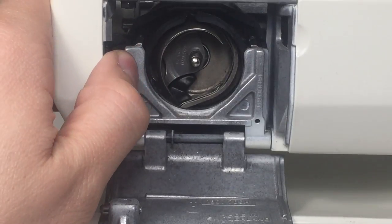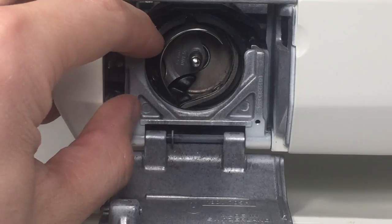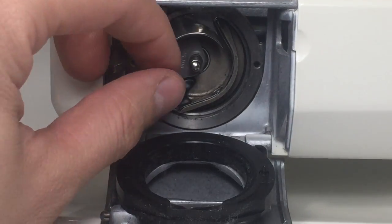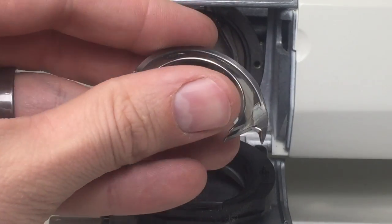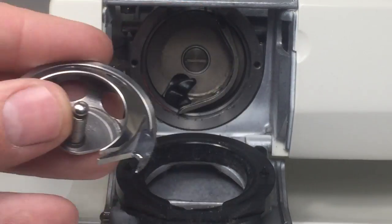Moving on, I'm going to release the race cover by pushing left on this single spring to remove the hook. Your machine may have two counter-rotating tabs. You'll just move them both to the outside and pull the race cover off.